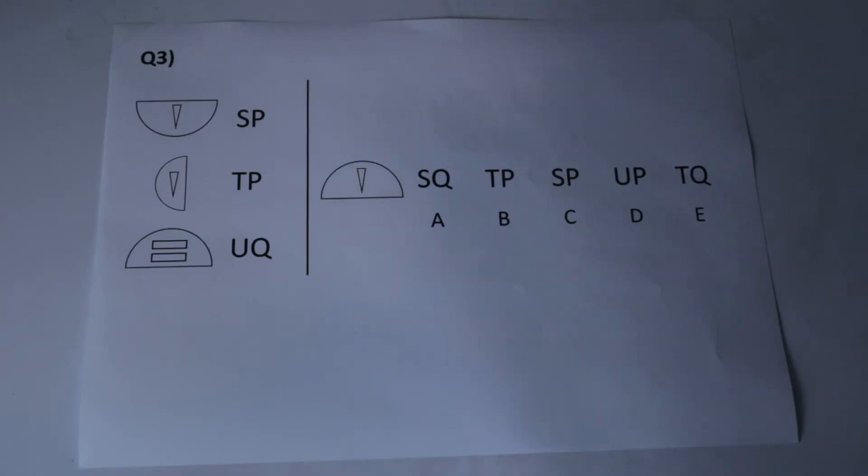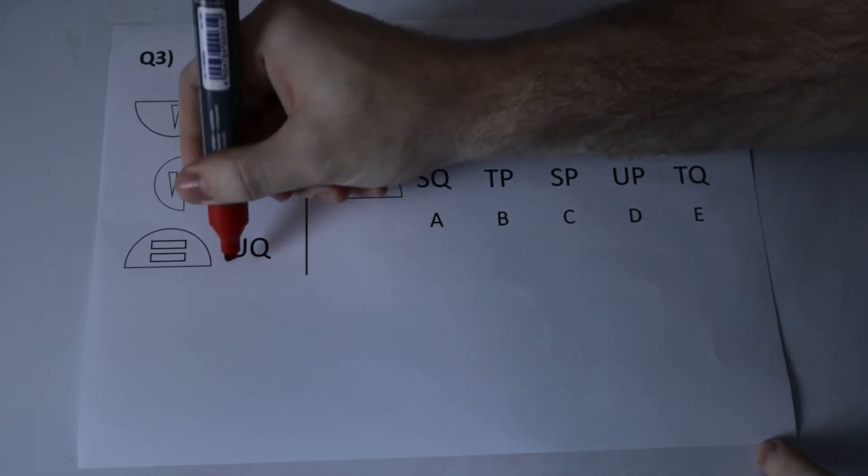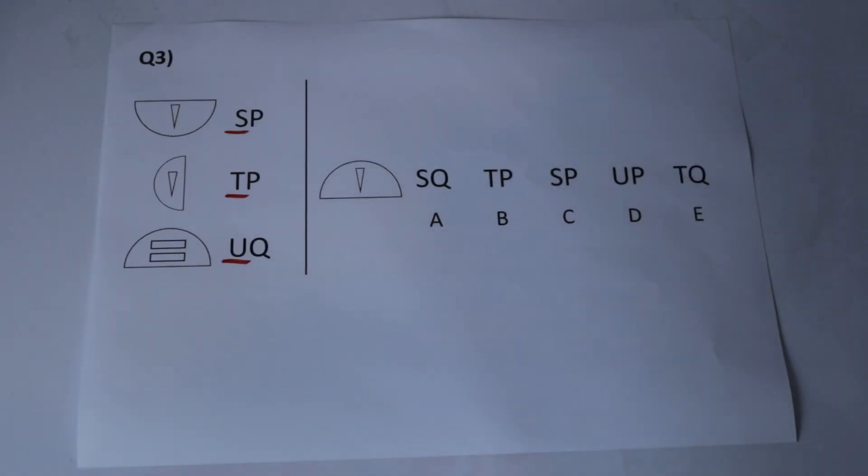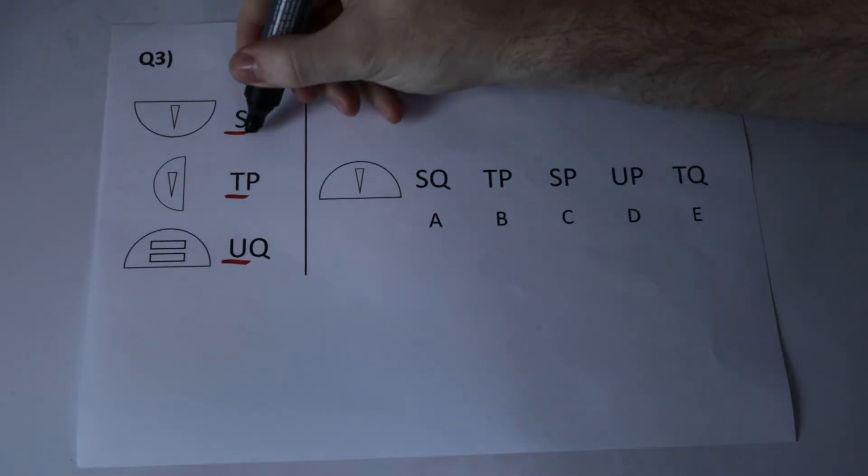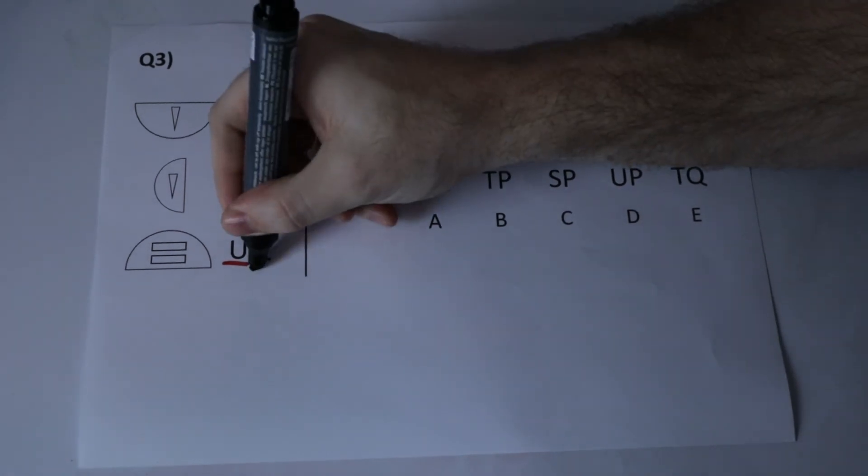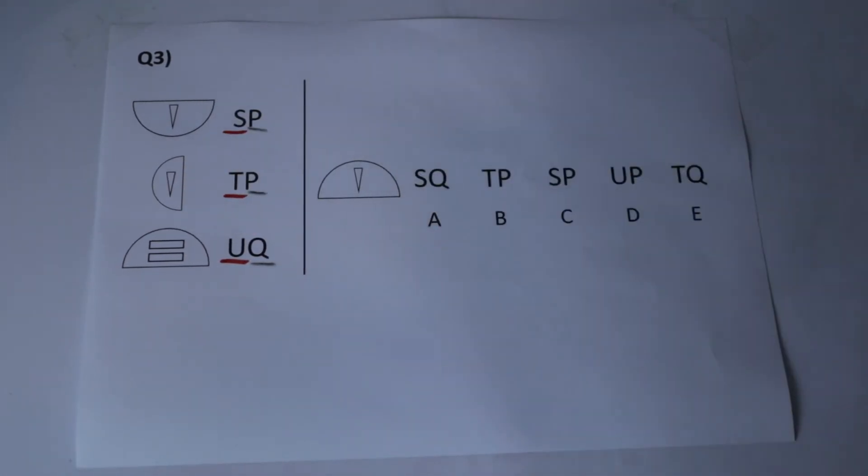So it's over to you for question three. Remember to isolate the first letter of each code and try and find out what that represents and then isolate the second letter of each code to try and find out what that represents and you should be able to solve for this shape here.